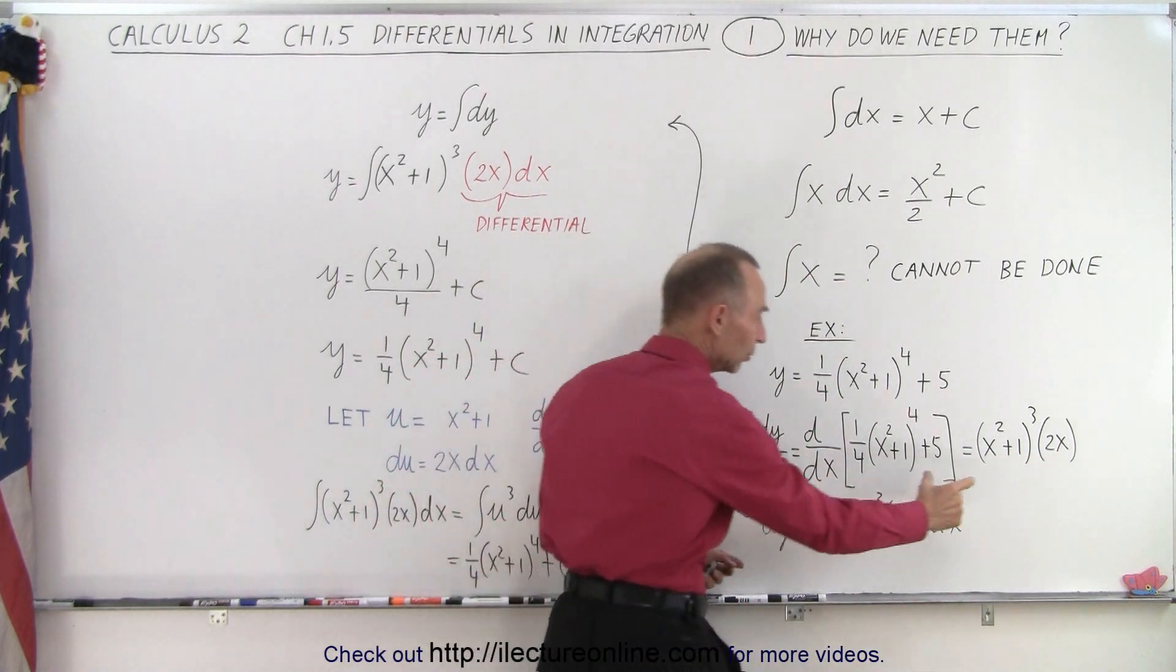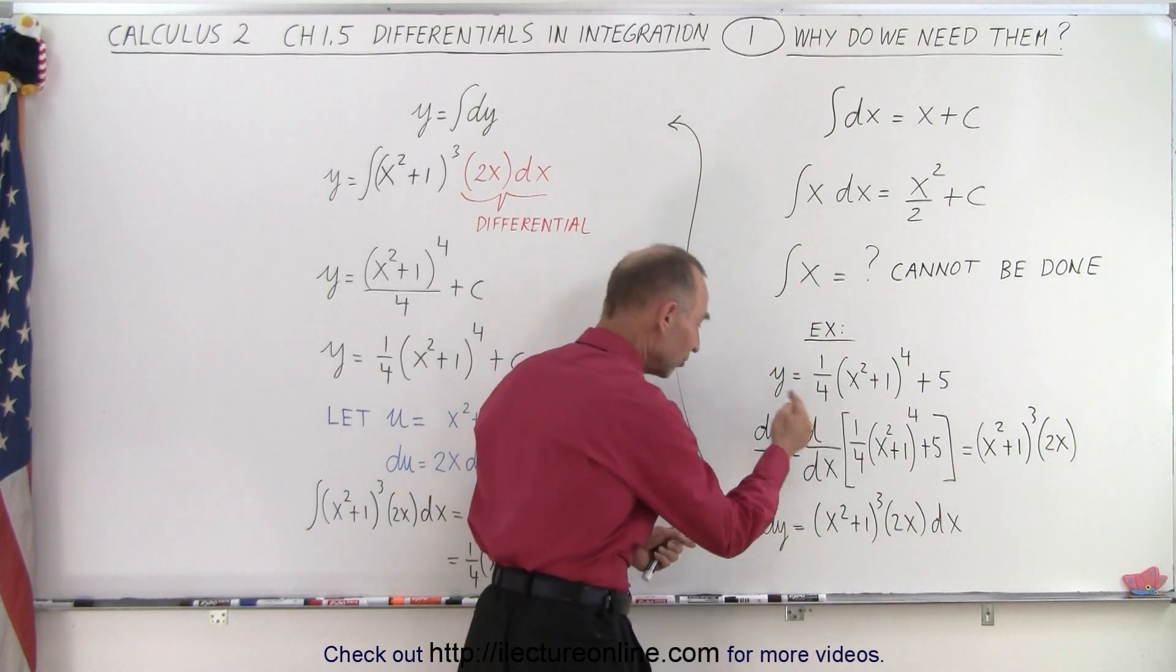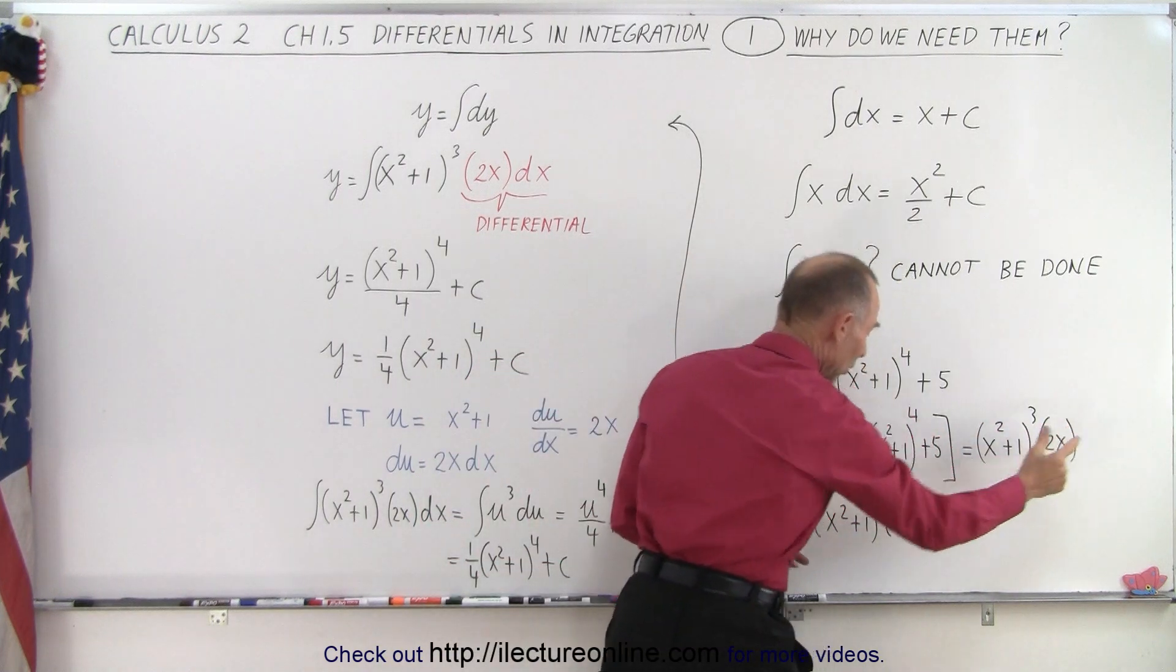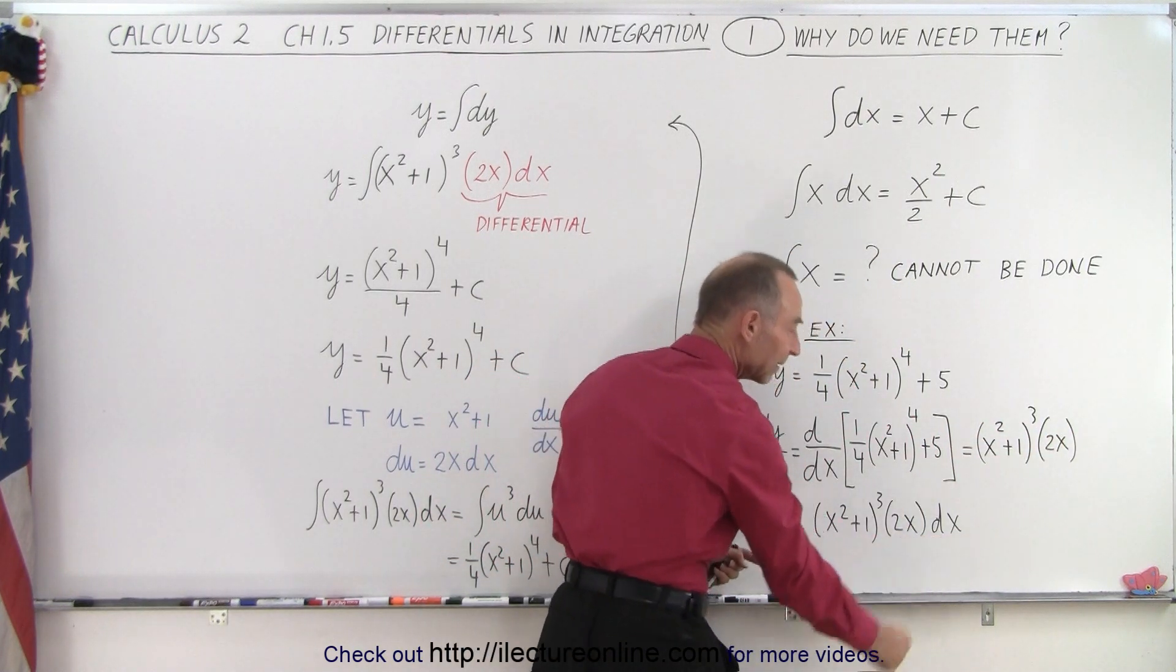So now we know that dy/dx is equal to x squared plus one to the third power times two x, and then if we solve this for dy, we move the dx to the other side. We end up with dy equals x squared plus one cubed times two x times dx.